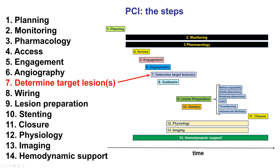Determining the target lesion or target lesions, if there is more than one, is the 7th of the 14 steps of percutaneous coronary intervention and actually marks the transition from the diagnostic to the interventional part of the procedure.